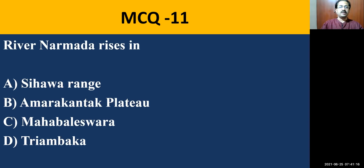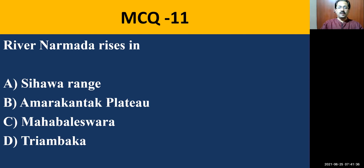MCQ number eleven: River Narmada rises in — Sihava range, Amarakantak plateau, Mahabaleshwara, or Triambaka. The correct answer is Amarakantak plateau, in the Michael range of mountains in Madhya Pradesh. It flows westward through Madhya Pradesh, Maharashtra, and Gujarat, and joins the Arabian Sea through the Marble Gorge.